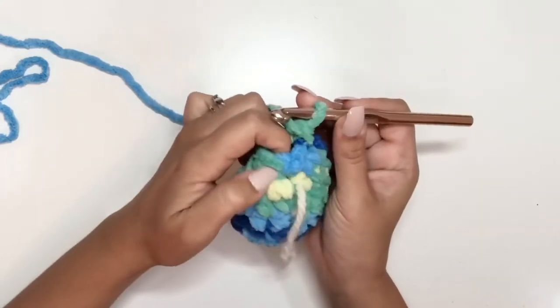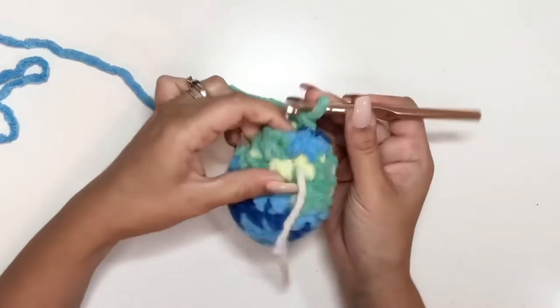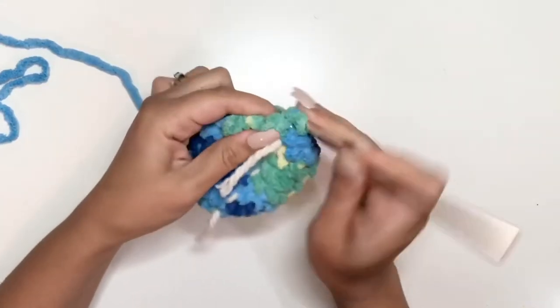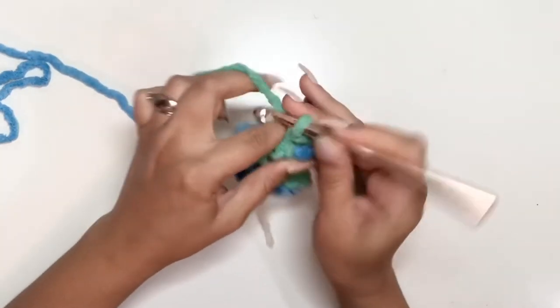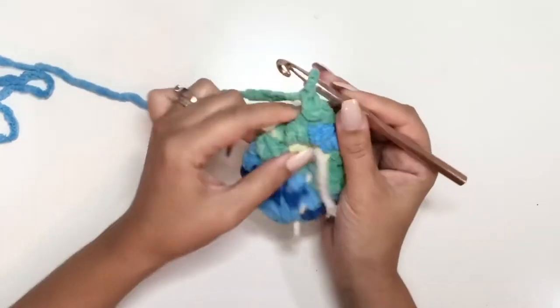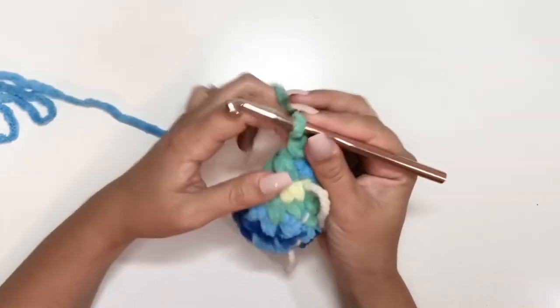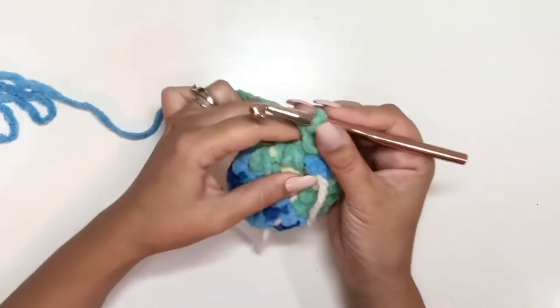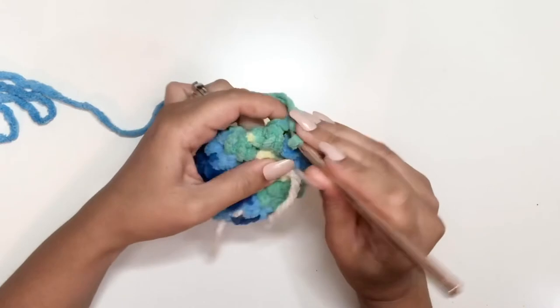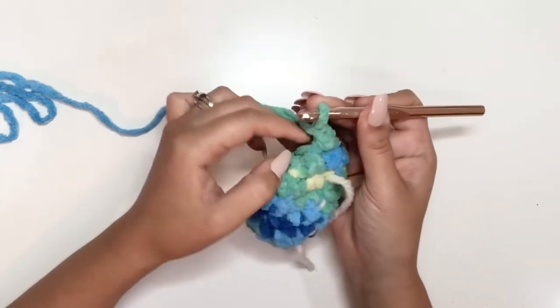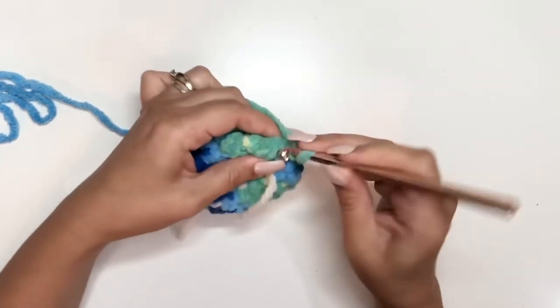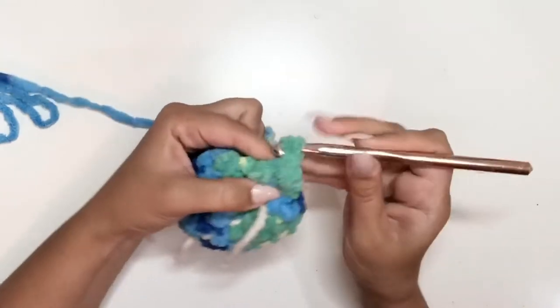We're going to join into that first single crochet decrease. Chain one, and now we're going to work on the part that comes out of the balloon. Now we're going to do two single crochets into each stitch. We have four stitches from the previous round, we're going to do two single crochets in each stitch for a total of eight.